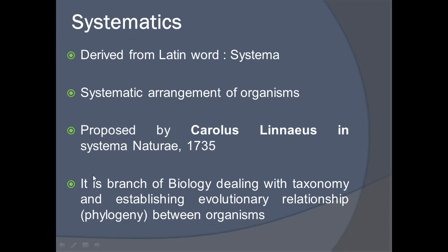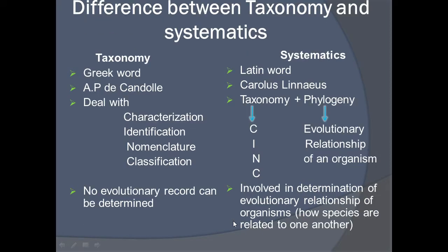Systematics is a branch of biology that deals with taxonomy and establishes evolutionary relationships between organisms. What is the difference between taxonomy and systematics? Taxonomy is a Greek word whereas systematic is a Latin word. The word taxonomy was given by AP de Candolle, whereas systematic was given by Carolus Linnaeus.